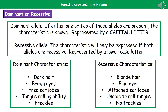Two other terms we need to know are dominant allele and recessive allele. The dominant allele will be shown whether we have one or two of those alleles present — it's like the stronger gene. If you've got one dominant and one recessive allele, you still see the dominant characteristic because it overpowers the other one. We always use a capital letter to represent the dominant allele. The recessive allele is only expressed if both alleles are recessive, and we always represent it with a lowercase letter.